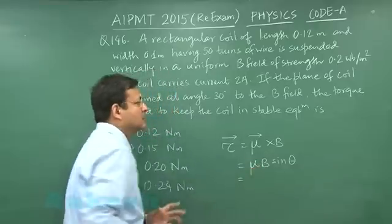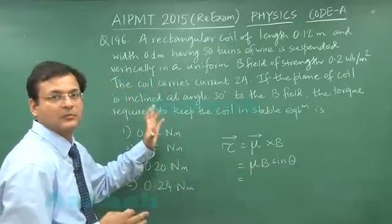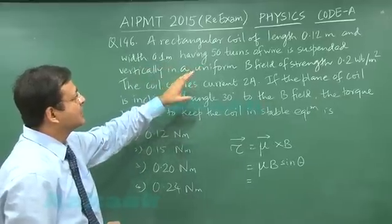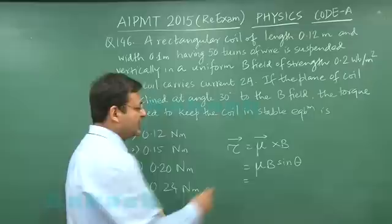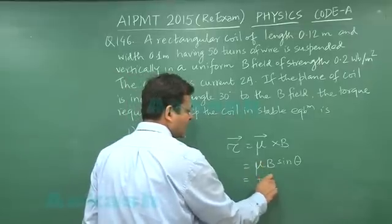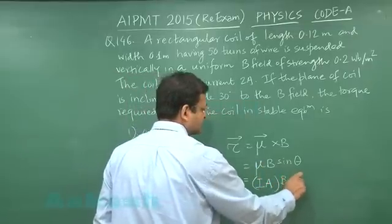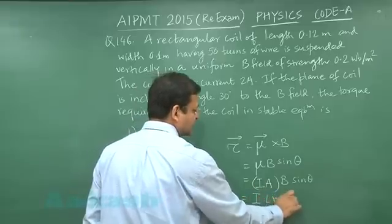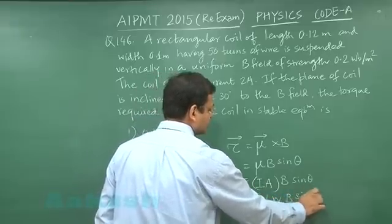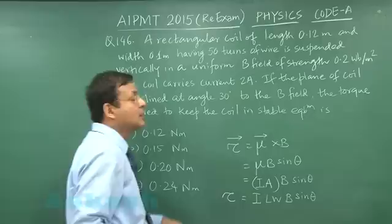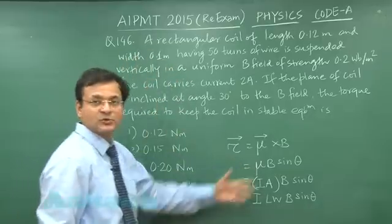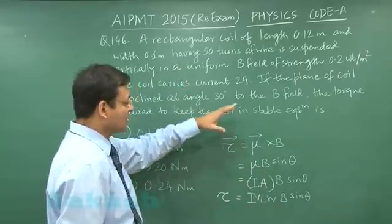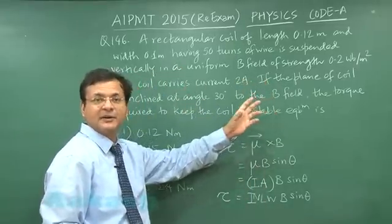The main idea behind this question is determining the correct angle to use. They have given the dimensions — length and width. So μ = current × area = current × length × width, and the full formula is τ = N × I × l × w × B × sinθ. The number of turns is also given as 50.